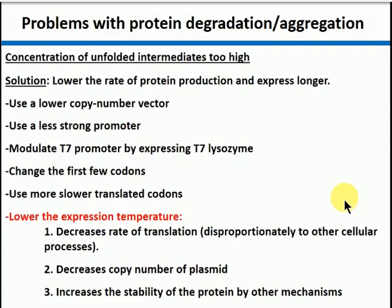So there are lots of different things you can do — you can use more slowly translated codons, or decrease the expression rate. One other thing you can do in real life, which is a bit harder to put on an exam: you can just lower the expression temperature. That has several effects — it decreases the rate of translation, which is particularly sensitive to changes in temperature. It also lowers copy number if you have a high copy number vector, going from around 25 copies per cell to something like 10 to 12 copies per cell. And it increases the stability of the protein by changing the physiology of the cell. A lot of people no longer produce proteins at 37 or even 30 degrees Celsius but just do an overnight expression at 25 degrees.